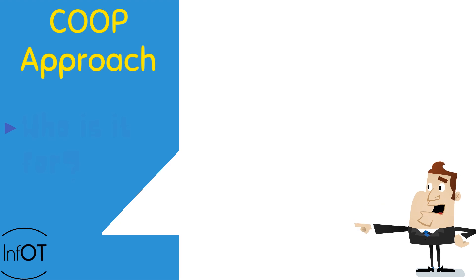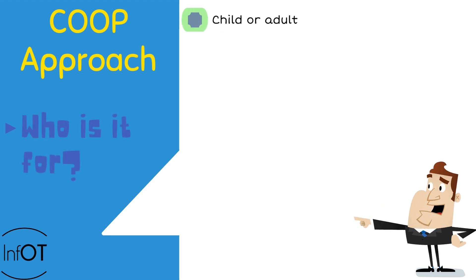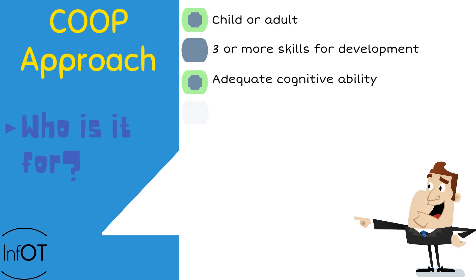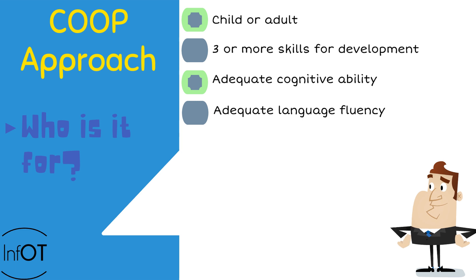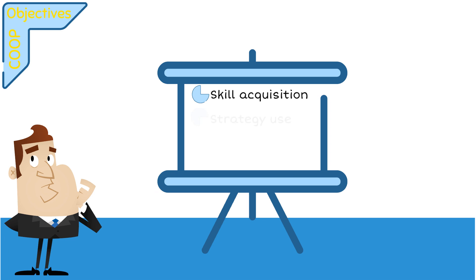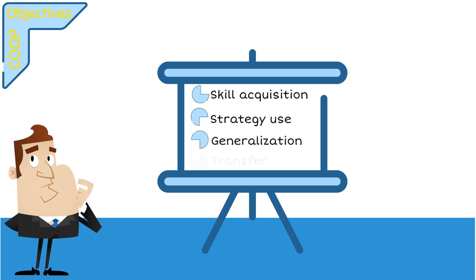CO-OP can be used with children or adults who are going to develop at least three skills, and who have adequate cognitive abilities and language fluency. CO-OP has four main objectives: skill acquisition, strategy use, generalization, and transfer.